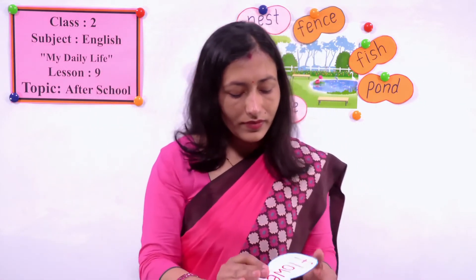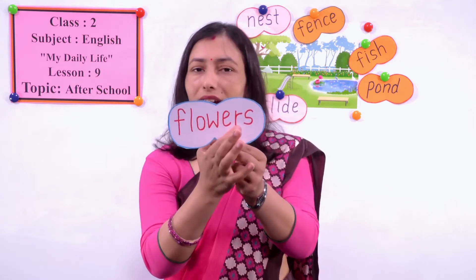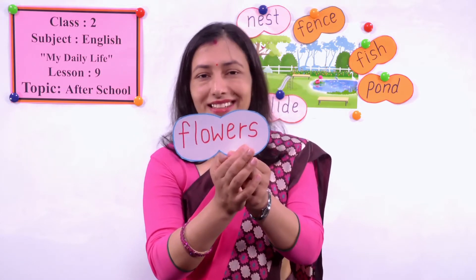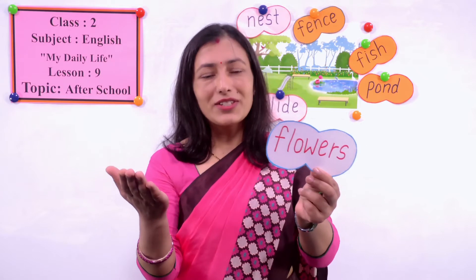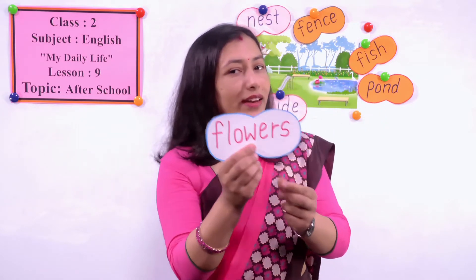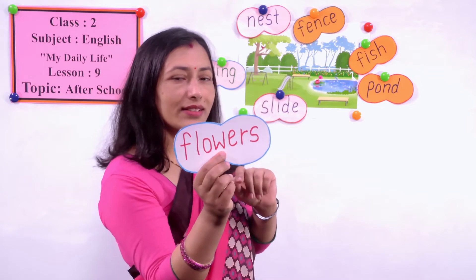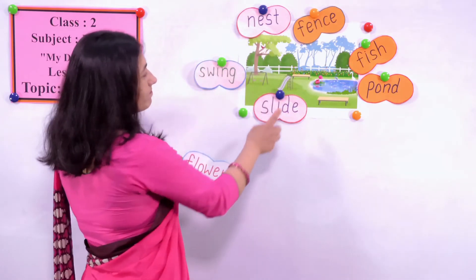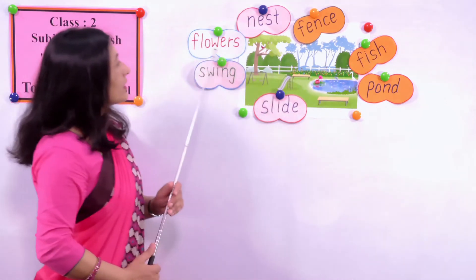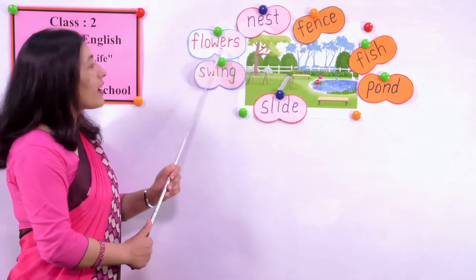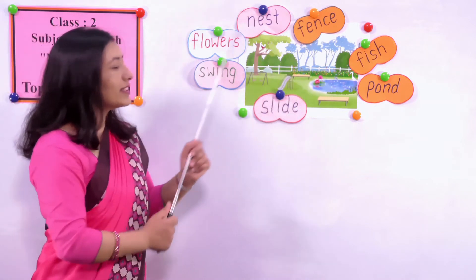Next - read the word. F-L-O-W-E-R-S. Flowers. Do you like flowers? Everybody does. I like flowers and you also like flowers - colorful flowers. And we can also see flowers in the garden. Where are the flowers? Let's find out. Here we can see - so let's paste the word over here and point to the flowers. Flowers. Here are the colorful, beautiful flowers we can see. Very good.